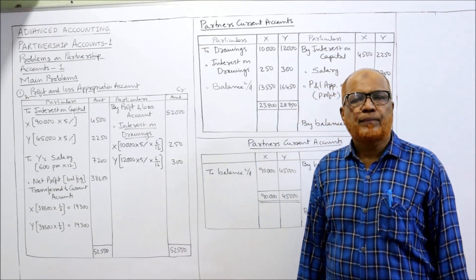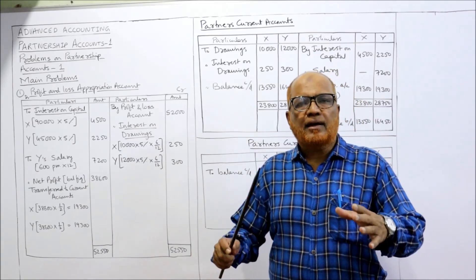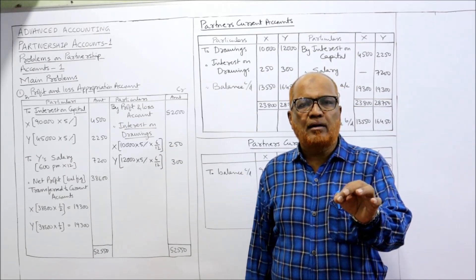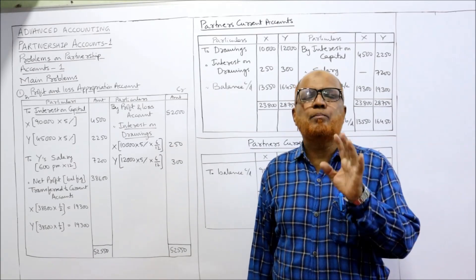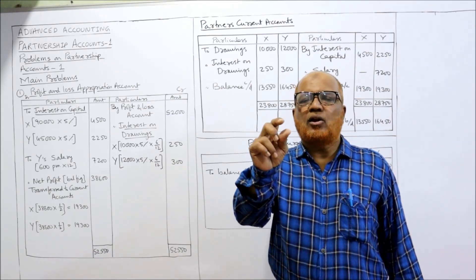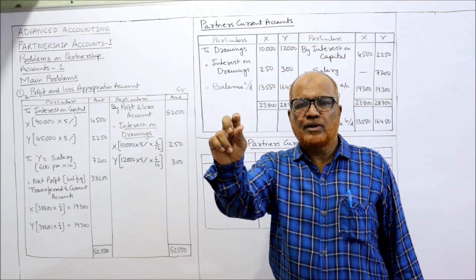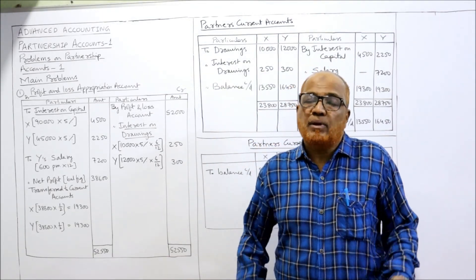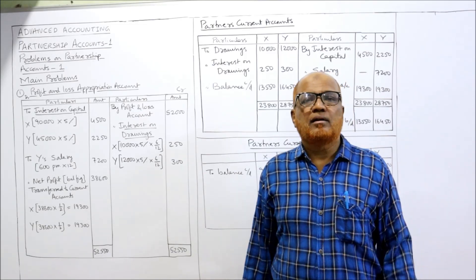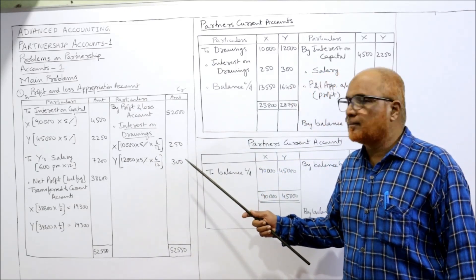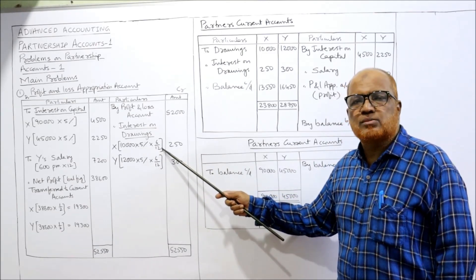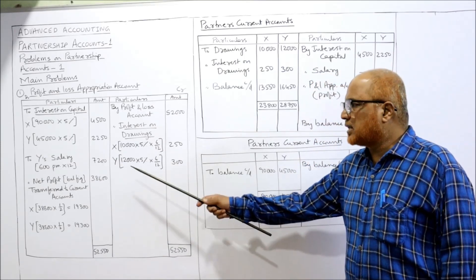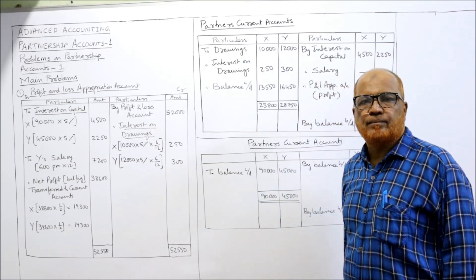The reason is: the capital remains intact for the whole year, whereas drawings are assumed to be made in the middle of the year. If dates are given, we calculate for the actual number of days or months, but when dates are not given we take 6 months. So for X: 10,000 × 5% × 6/12 = 250. For Y: 12,000 × 5% × 6/12 = 300. These are the interest on drawings amounts.